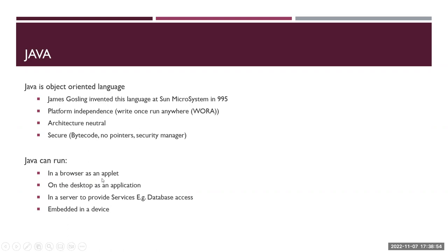As an applet, you can run it on your desktop. Most applications, like when you download a .exe file — let's say you download a Zoom application — you install it once and it keeps on running. Similarly, Java works the same way.